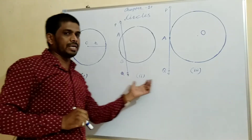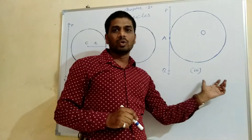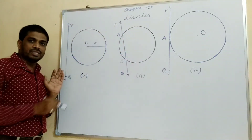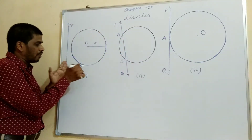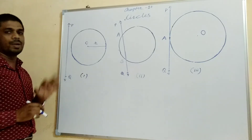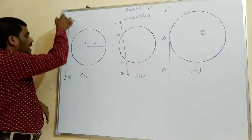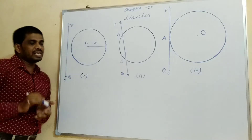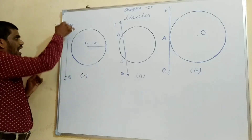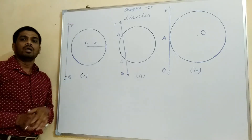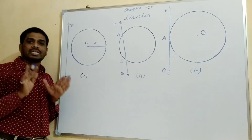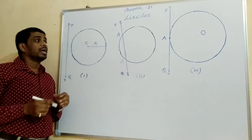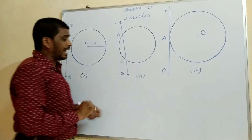There are 3 possibilities to draw a line with a circle. Let us see them one by one. In the first figure, there is no common point of the line PQ and the circle. So in this case, the line PQ is called a non-intersecting line with respect to the circle.